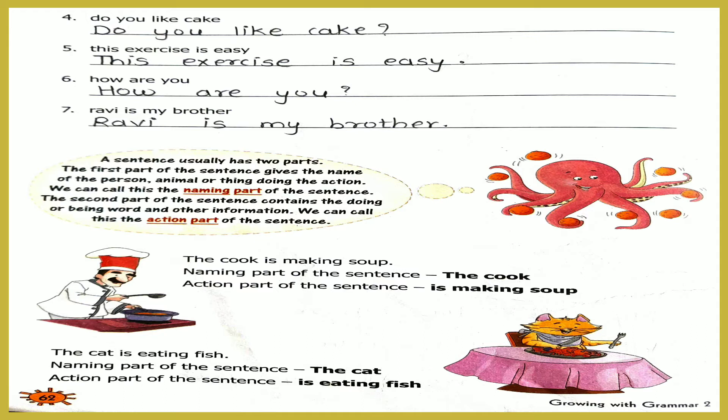Number 5: 'This exercise is easy.' The first letter should be capital and put a full stop. Number 6: 'How are you?' This is a question, so first letter capital and a question mark. Number 7: 'Ravi is my brother.' Here also the first letter should be capital and put a full stop.